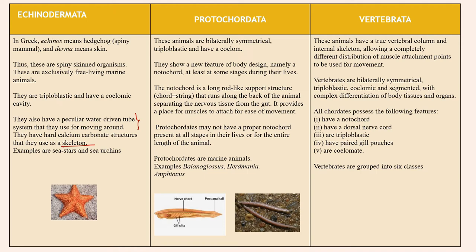Then next is Protochordata. These animals are bilaterally symmetrical, triploblastic, and having a coelom. They show a new feature of body design: a notochord — a long rod-like support structure that separates nervous tissue from the gut and provides a place for muscles to attach for ease of movement. Protochordates may not have a proper notochord at all stages of their lives or for the entire length of the animal. They are marine animals; examples are Balanoglossus, Herdmania, and Amphioxus.